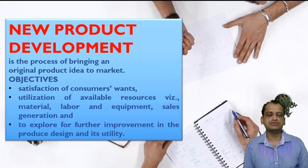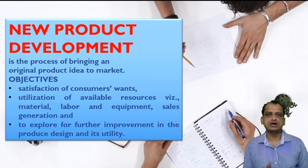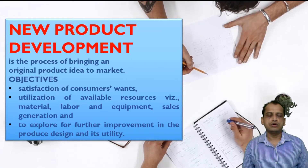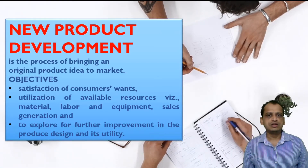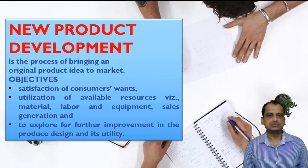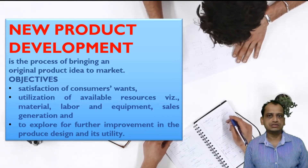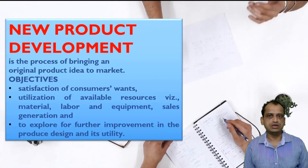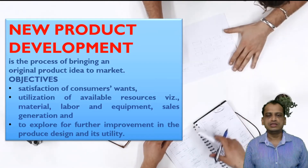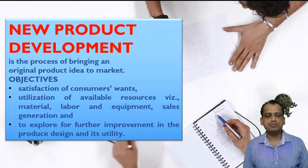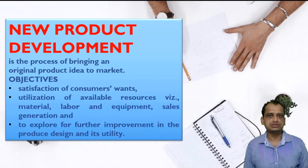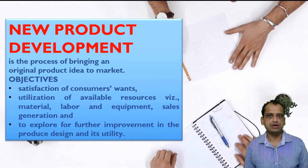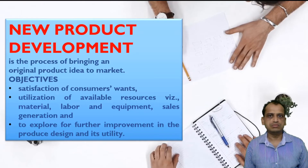Talking about the objectives, the first and foremost is ultimate customer satisfaction. Whatever the customer demand is — the features they want — the company will try to incorporate those features into the design of the product. Then there is the objective of optimum resource utilization: whatever resources you have — raw materials, machines — you will utilize them within the organization to achieve these product launches.